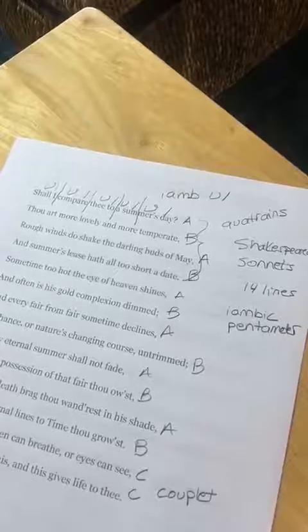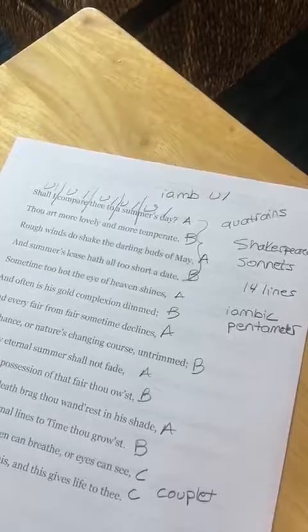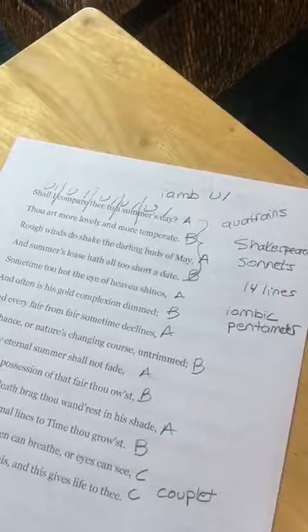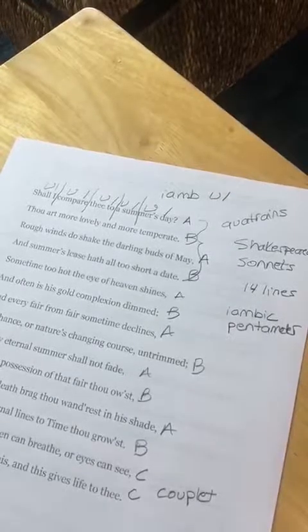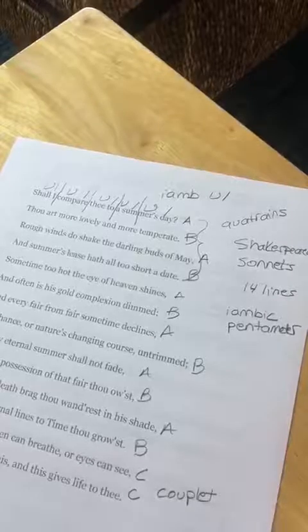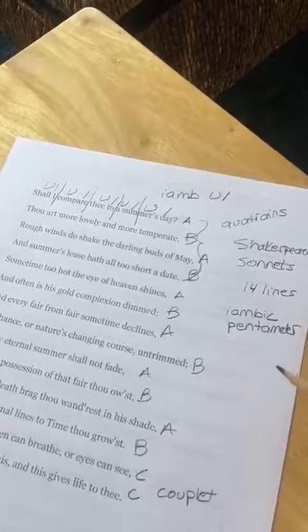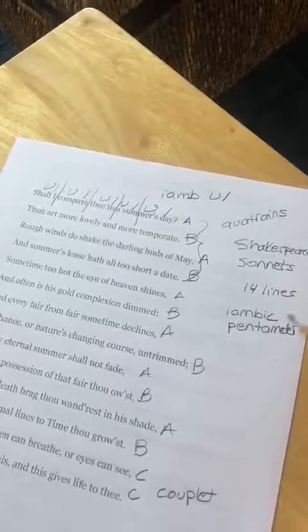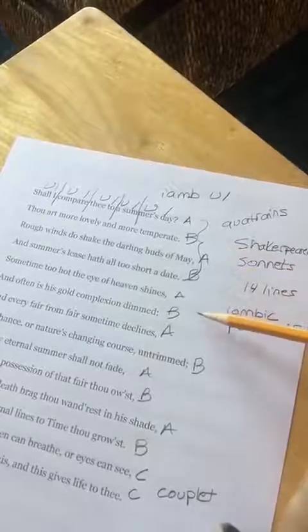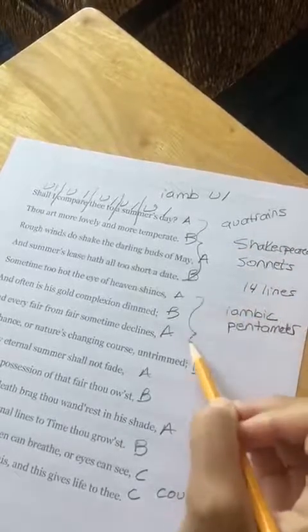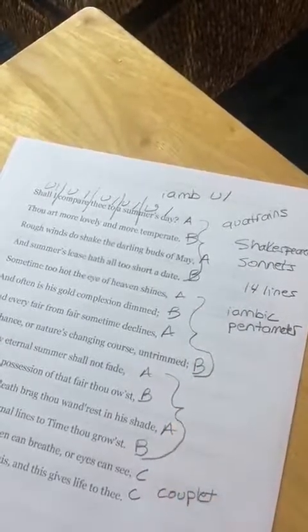So one, another thing to know about a sonnet is that it is an argument. Often people talk about sonnets as almost like legal arguments. And one thing that's kind of fun about them is they usually end with a little bit of a twist. So we talked about how they're made up, Shakespearean sonnets are made up of three quatrains, and then this couplet at the end.